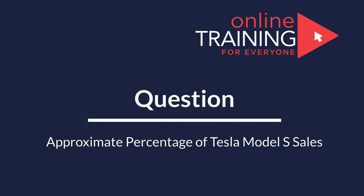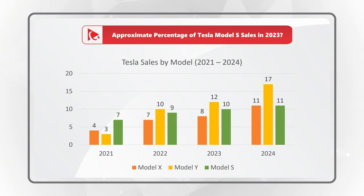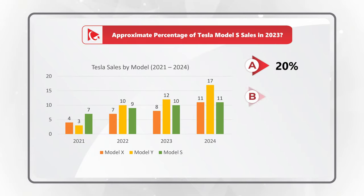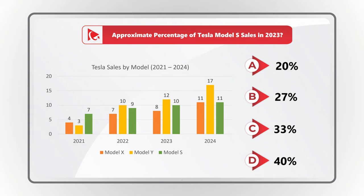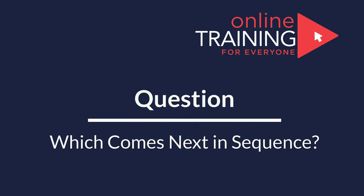Now try your skills: determine the approximate percentage of Tesla Model S sales in 2023. You're presented with a chart showing sales by model between 2021 and 2024. Choices are A) 20%, B) 27%, C) 33%, or D) 40%. Pause the video, do the mental math, and post your answer in comments — good luck!